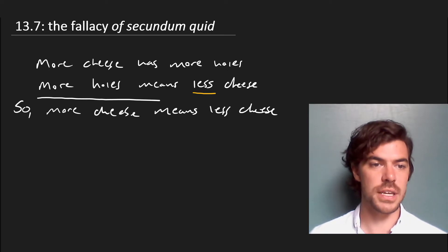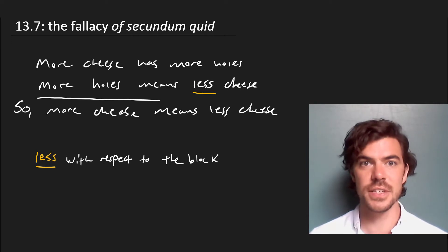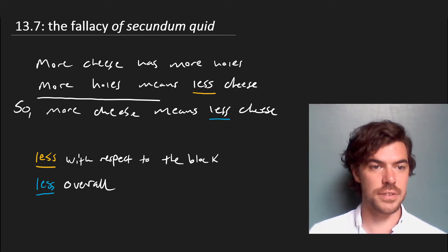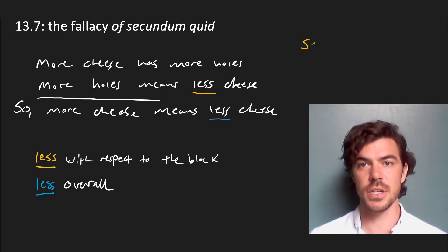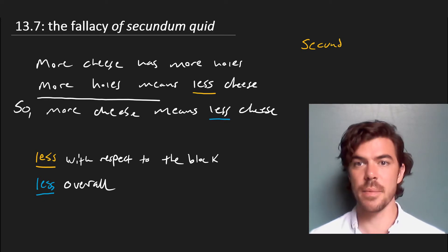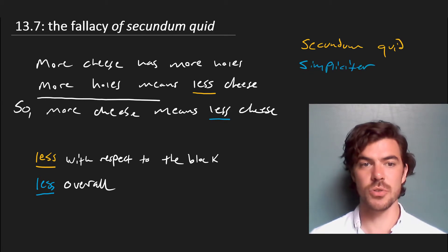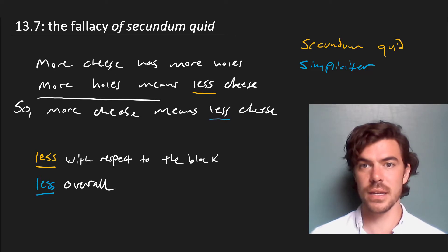This 'less' in the second premise is less with respect to the block — more holes in a block means less cheese in a block. But this 'less' down here is less cheese overall, and these two types of less are not equal. The top one is less in a certain respect, and that's called secundum quid, which is a Latin term meaning 'in respect to something.' The bottom less is simpliciter — taken in the most straightforward way. In general, it's a fallacy to move from a secundum quid statement to a simple one.